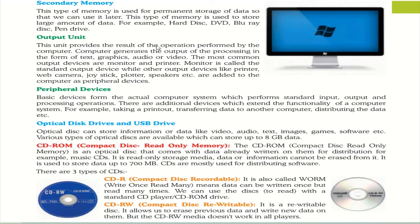Optical disks can store data like video, audio, text, images, and game software. The first type is CD-ROM — Compact Disc Read Only Memory. It is an optical disk that comes with data already written on it for distribution, for example music CDs. It is read-only storage media; data cannot be erased from it. Data cannot be erased from a CD unless the disc has been corrupted by viruses.